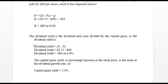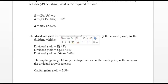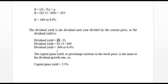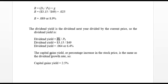The dividend yield — wherever you see yield, just remember it's a percentage — is the dividend next year divided by the current price. So D1, which is $3.15, divided by the price, gives us 6.4% as the dividend yield for this particular stock.